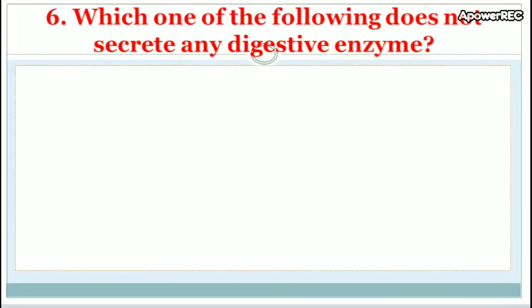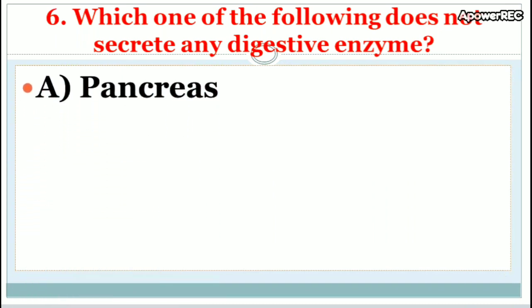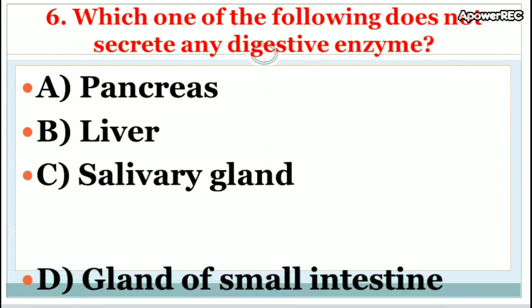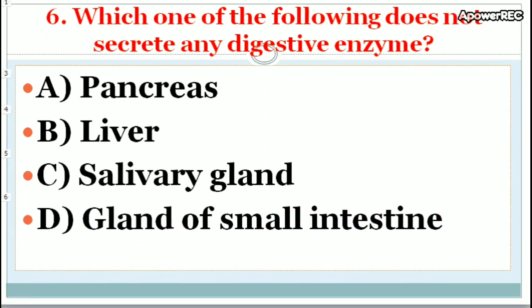Question: Which of the following does not secrete any digestive enzyme — pancreas, liver, salivary gland, or glands of the small intestine? The correct answer is the liver. The liver does not secrete digestive enzymes; it secretes bile, which helps digestion. The liver's average weight is 1,500 grams, around 1.5 kg. The pancreas produces insulin.